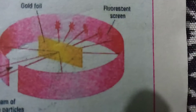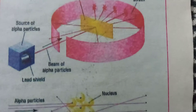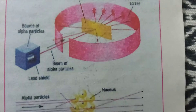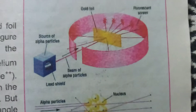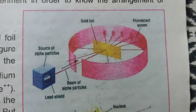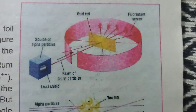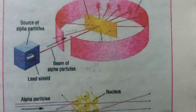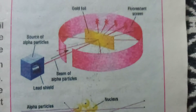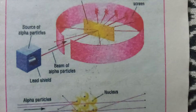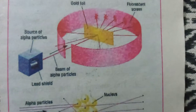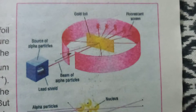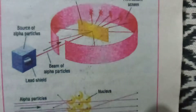He noticed that most of the particles passed straight through the gold foil and hit the fluorescence screen. However, some particles were deflected back at an angle greater than 90 degrees. The reflection of particles at greater than 90 degrees showed electrostatic repulsion between the positive charge of the alpha particle and the positive charged part of the atom.